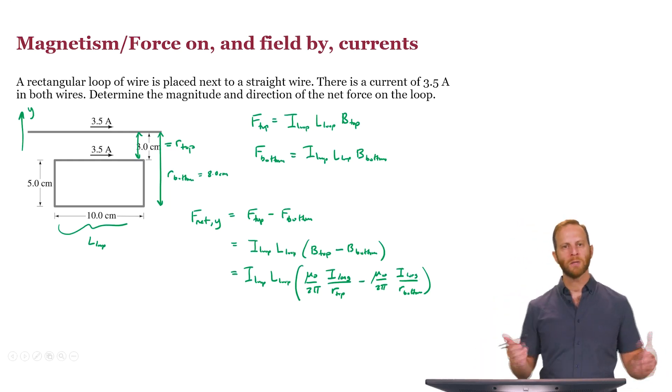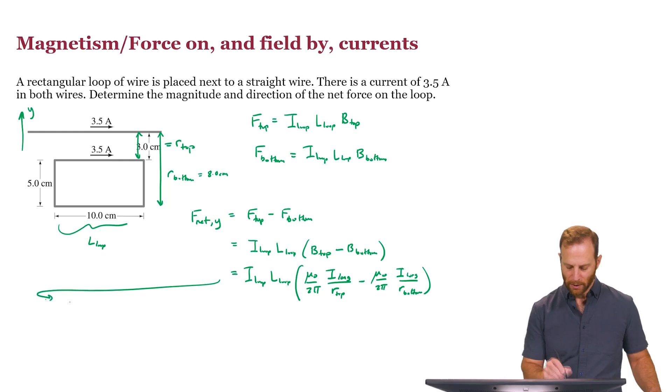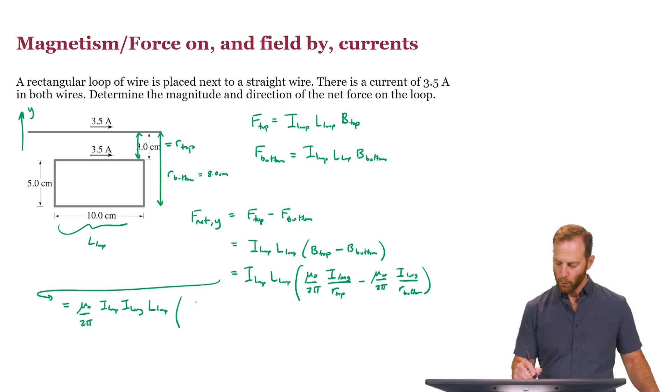And so we're nearly there. We're just doing as much algebra as we can to make our lives easier and to try to avoid errors. We can write all of this as mu-naught over two-pi times current in the loop, current in the long wire, times the length of the loop. And then what remains in parentheses is one over R top minus one over R bottom.